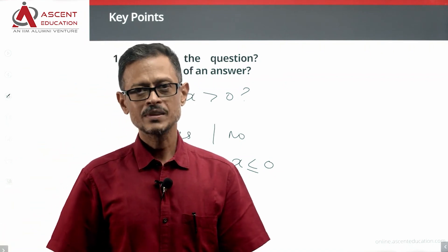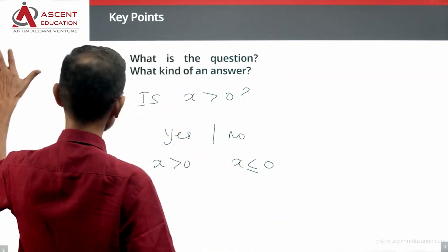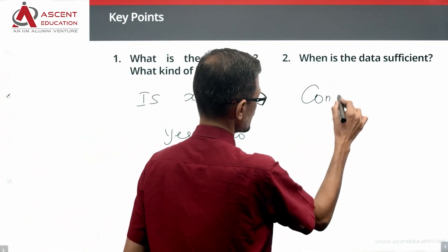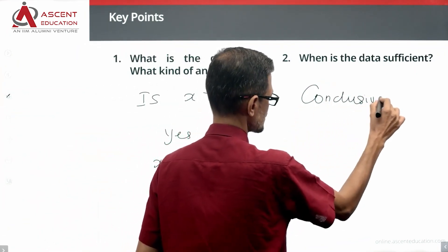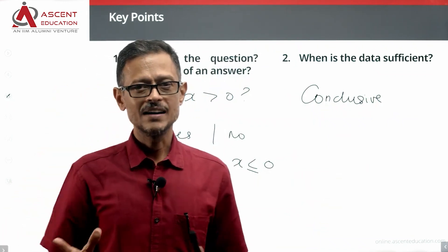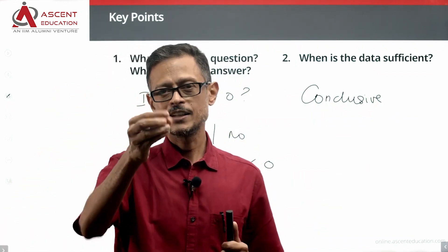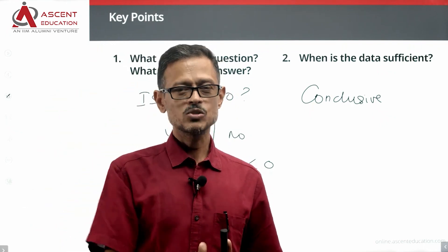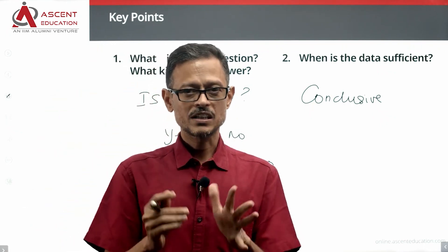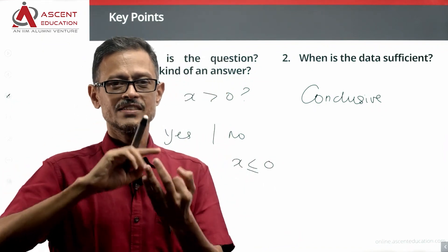Keep this perspective in mind. In yes-or-no questions, how is data sufficient? The data is sufficient when you have a conclusive answer — a definite yes or a definite no. If x is positive, then the data is sufficient. With this perspective, understand what kind of answer the question yields.